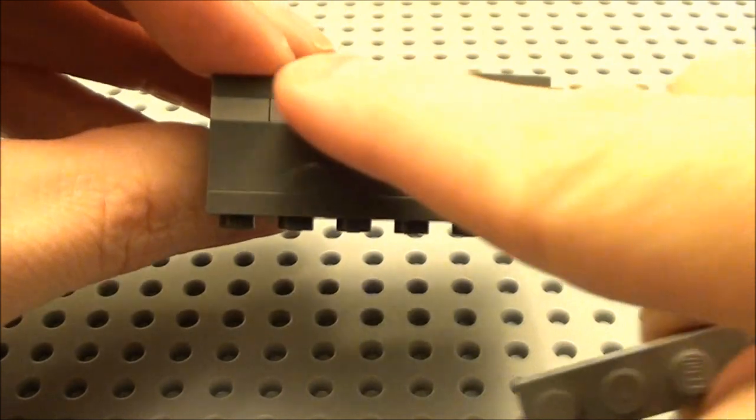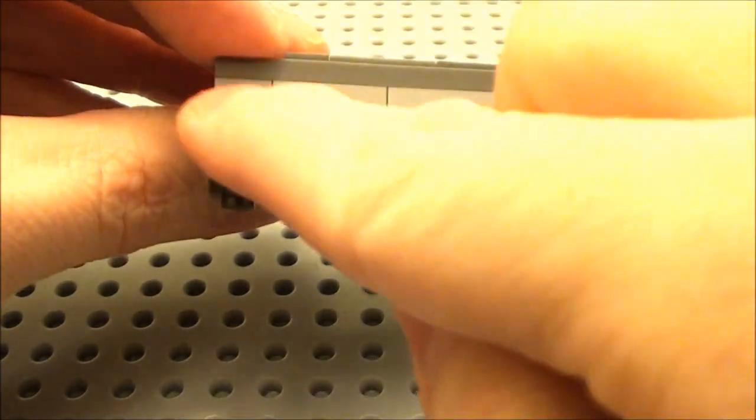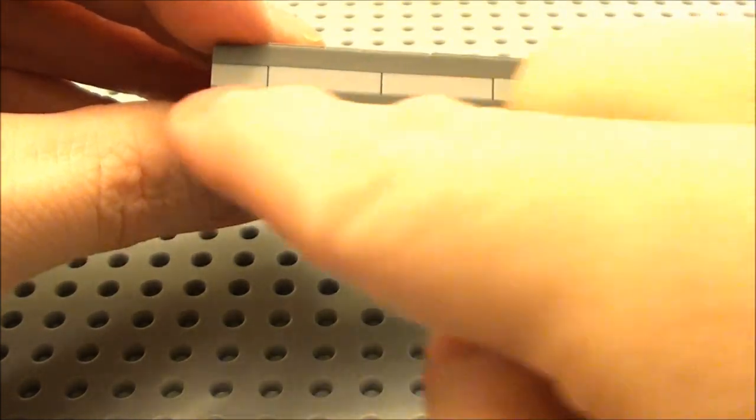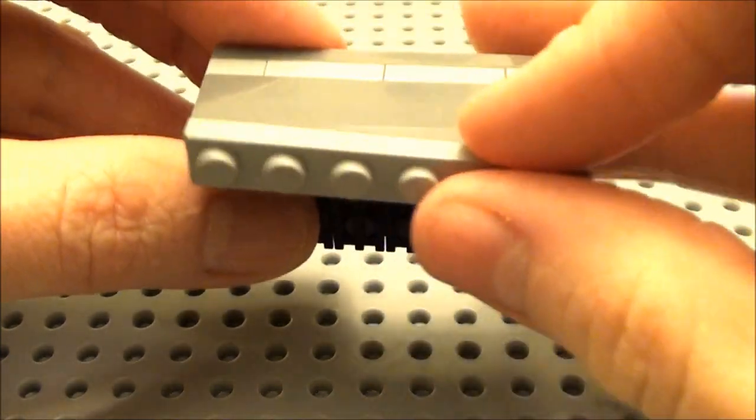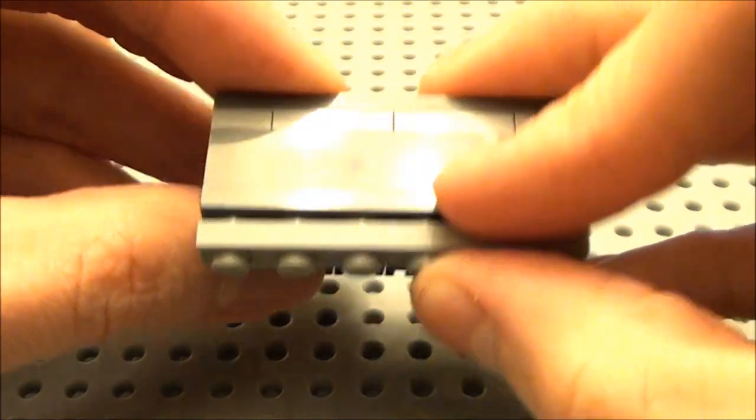And since I had to use gray here, I didn't have any light gray or dark gray, so I used light gray here. I'm just going to take a light gray 1 by 6 plate, stack it on here just to keep things balanced.